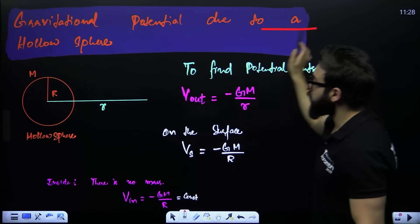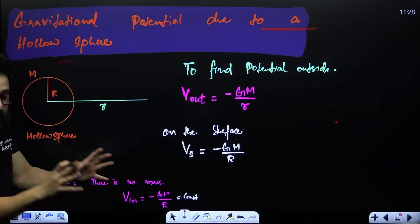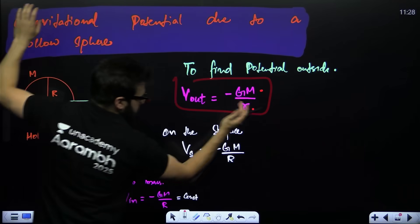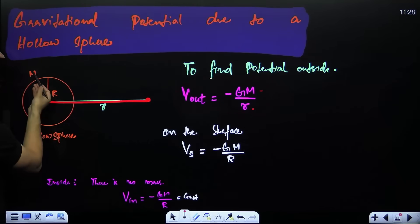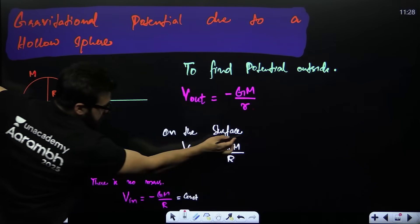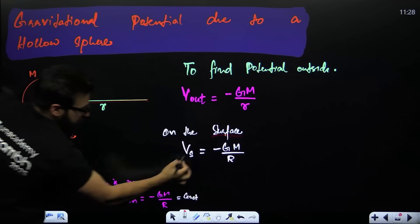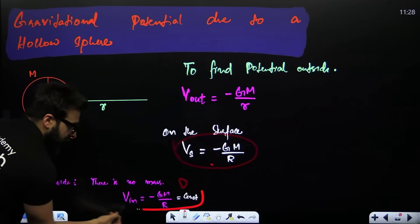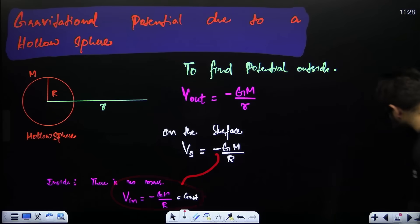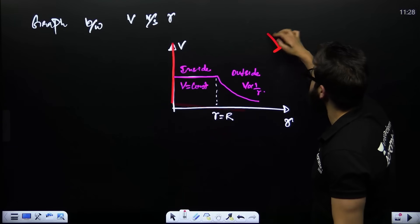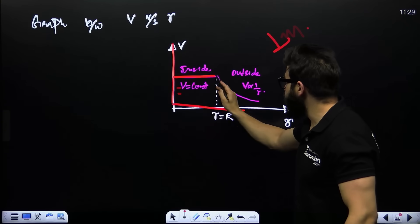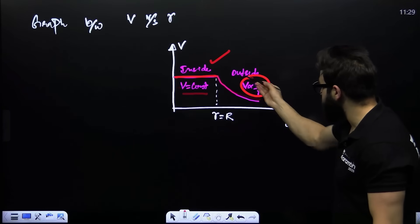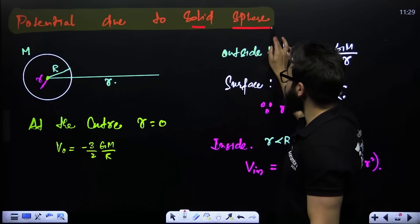Gravitational potential due to a hollow sphere: outside at distance r, V = −GM/r. On the surface (r = R), V = −GM/R. Inside the hollow sphere, potential is constant and equal to the surface value. The graph of |V| vs r is flat inside and then decreases as 1/r outside.